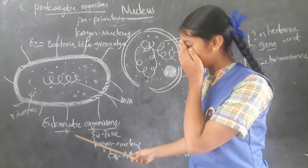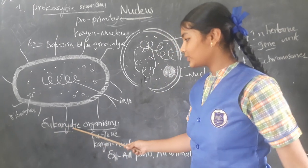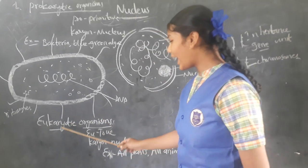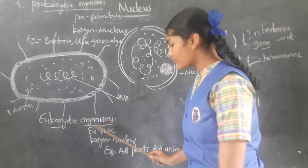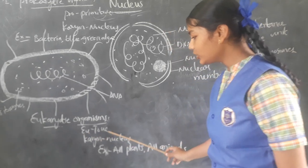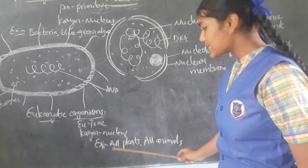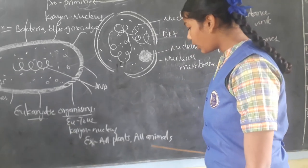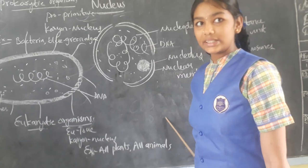Eukaryotic organisms — 'eu' means true, 'karyon' means nuclear. Examples of eukaryotic organisms include all plants and all animals.